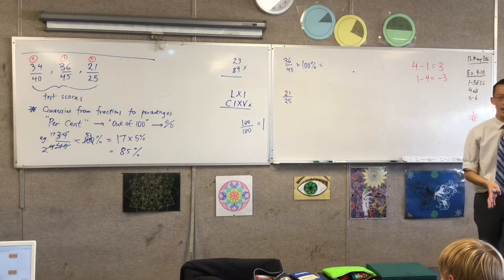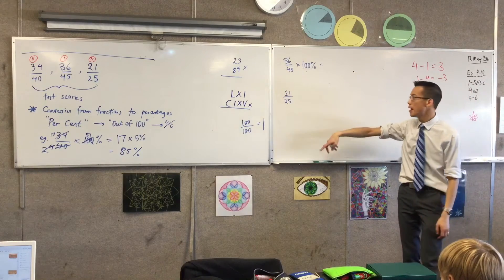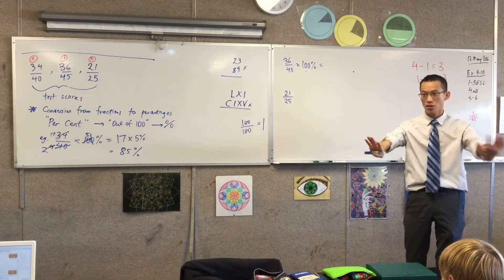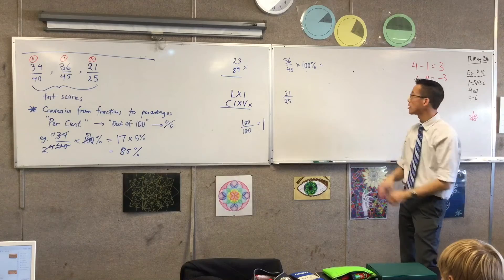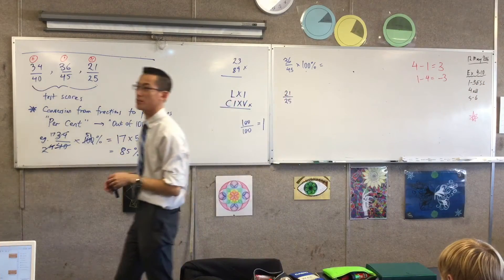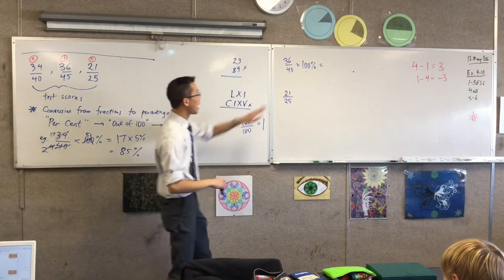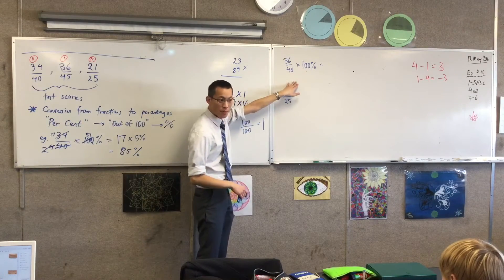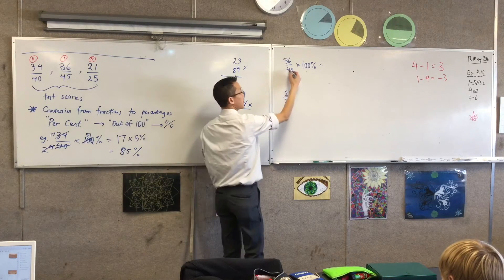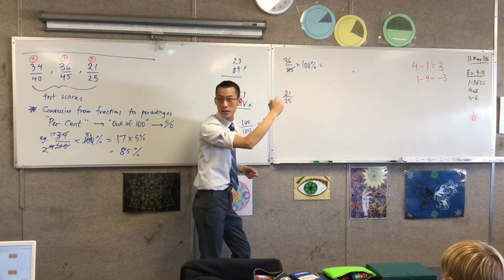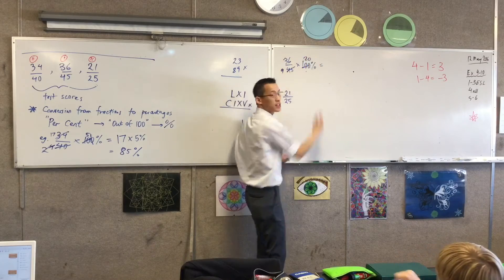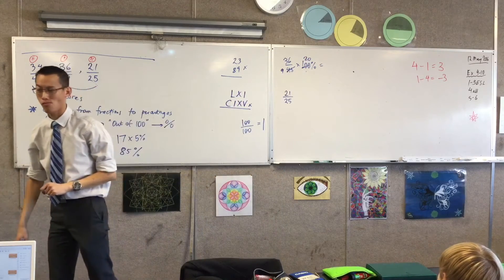I'm going to do this one a little bit quicker, because the process is the same as what we did last time. What's something I can cancel? What's the biggest number I can cancel? Okay, I can cancel between these two numbers. What should I divide by? I can divide by 5, can't I? So if I divide this by 5, it leaves me with 9. And I divide this by 5, which leaves me with 20. That's good. Can I do anything else?